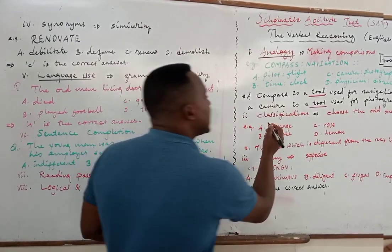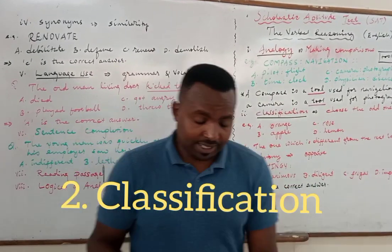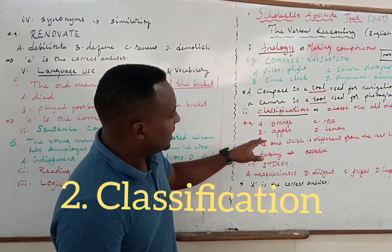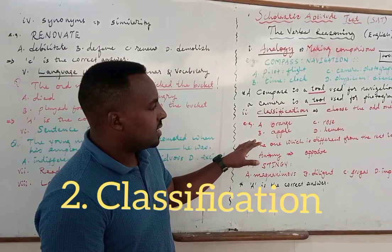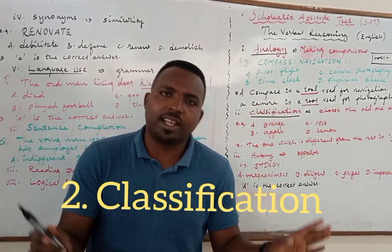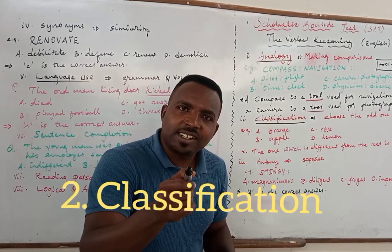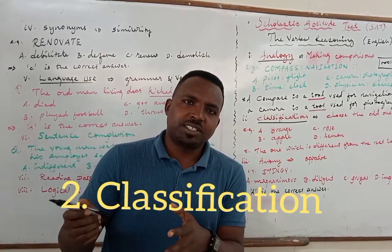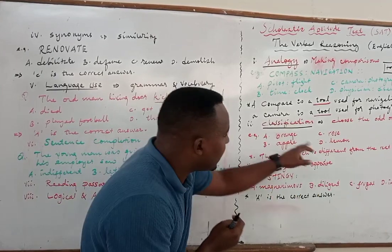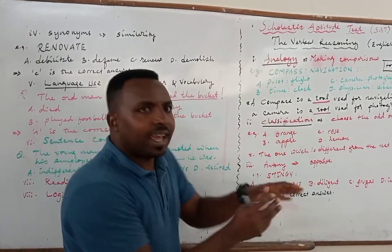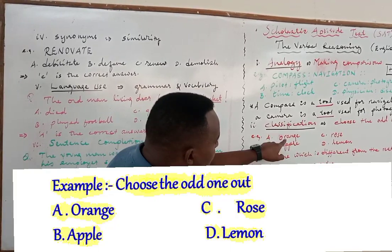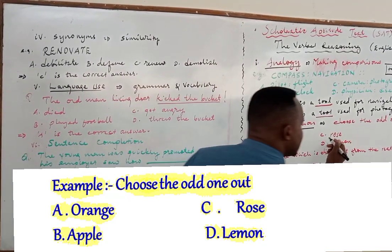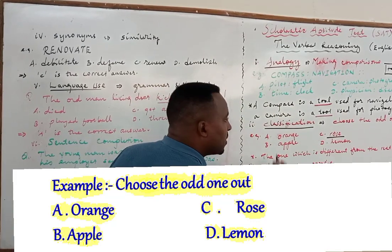The next section is classification. Classification, as the name indicates, is all about grouping. In this section you'll be given four items, out of which one is different. The instruction will say: choose the odd one out, or choose the one which does not belong to the group. You're going to select the one which is different — the rest three have something in common.